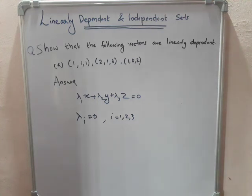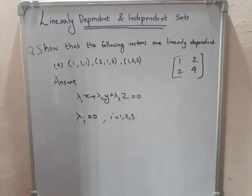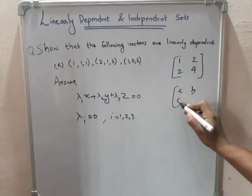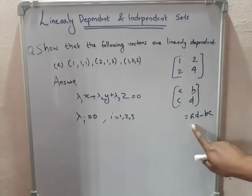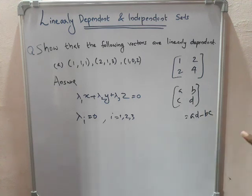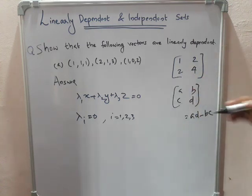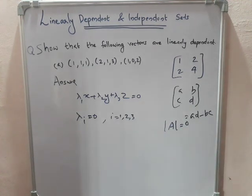Let us see another example. I am writing the matrix 1, 2, 2, 4. This is a matrix formula. How do we determine the determinant? We write A, B, C, D. The determinant equation is A·D minus B·C. So the determinant is A·D minus B·C. If it equals zero, the determinant is zero, which means it is linearly dependent.